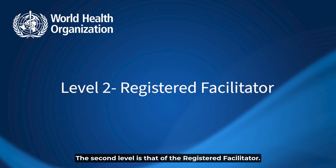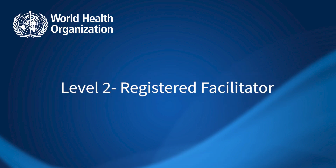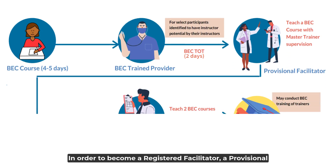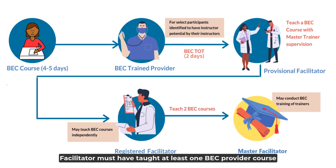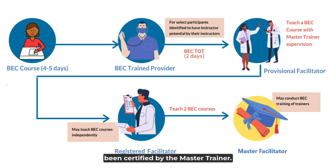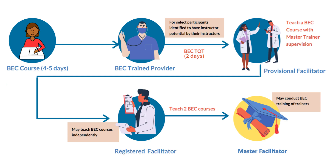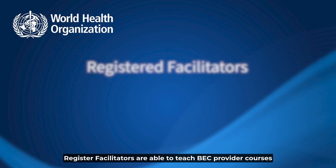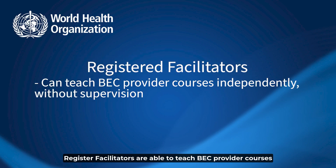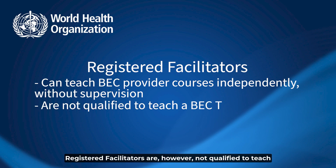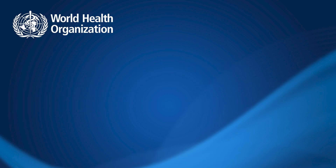The second level is that of the registered facilitator. In order to become a registered facilitator, a provisional facilitator must have taught at least one BEC provider course under the supervision and guidance of a master trainer and have been certified by the master trainer. Registered facilitators are able to teach on BEC provider courses independently, without supervision. Registered facilitators are however not qualified to teach a BEC-TOT course.